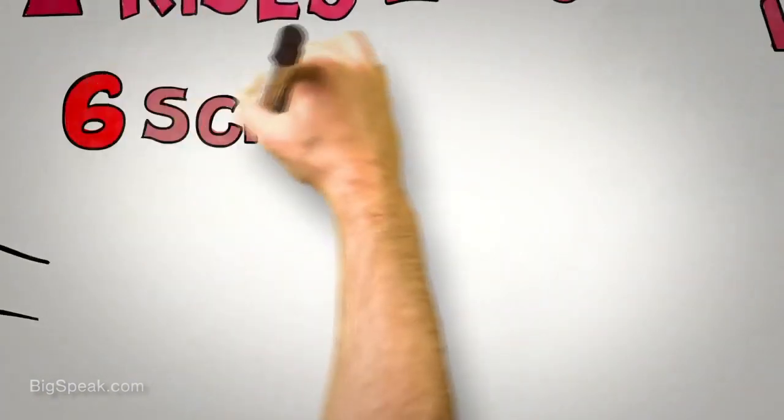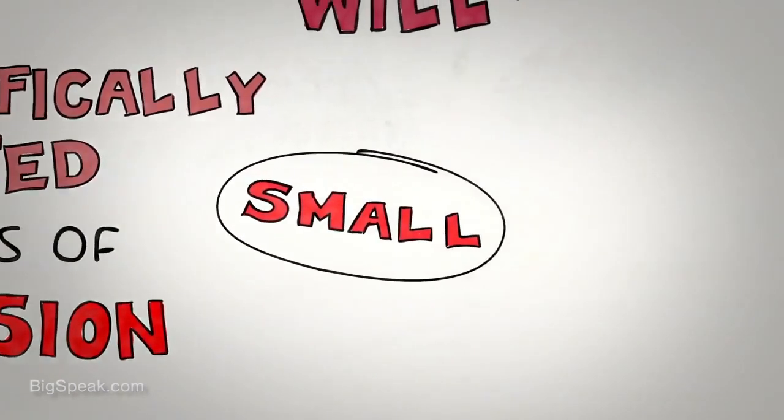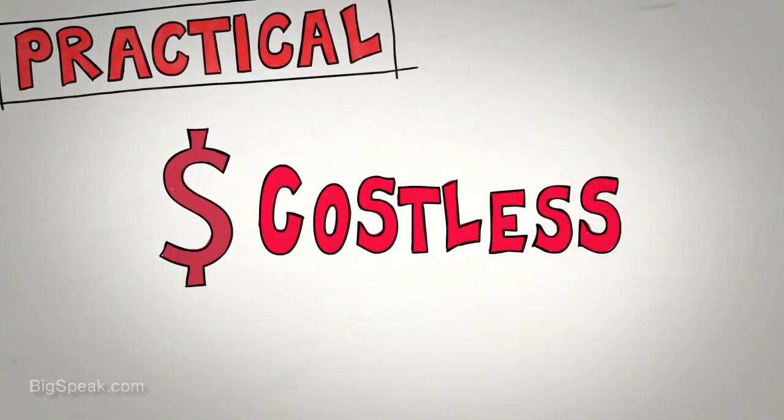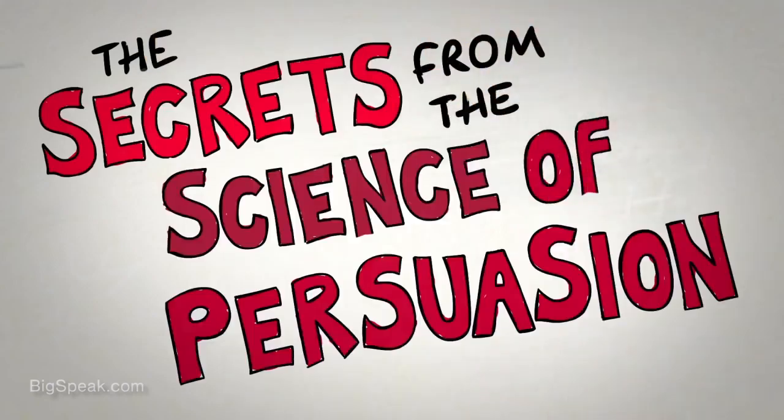So there we have it, six scientifically validated principles of persuasion that provide for small, practical, often costless changes that can lead to big differences in your ability to influence and persuade others in an entirely ethical way. They are the secrets from the science of persuasion.